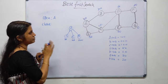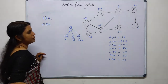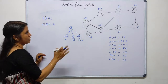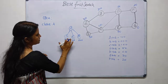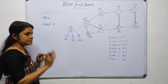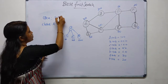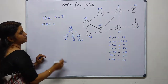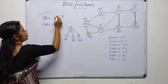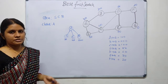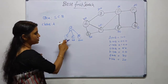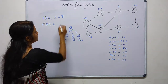Since A is already visited, we remove it from the open list and place it into the closed list. Then we put the successors S, C, and B into the open list in ascending order: S (50), C (100), B (200). The first node in the open list is the next node to be traversed, so S is selected next as it has the minimum heuristic value of 50.